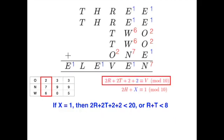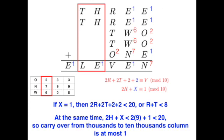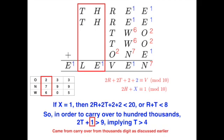If this is said, let's suppose X is 1, then this means 2R plus 2T plus 2 plus 2 must be less than 20, in order to prevent a carryover of 2. Simplifying the inequality gives R plus T less than 8. At the same time, if we look at the thousandth digit column, we see that 2H plus X must be less than 2 times 9 plus 1. Since this is less than 20, we see that the carryover from the ten thousandth to the hundred thousandth digit column is at most 1.